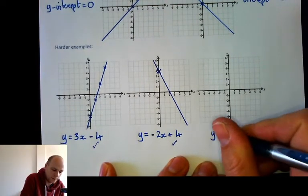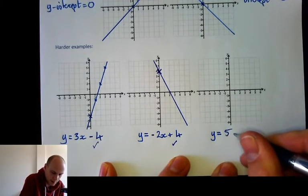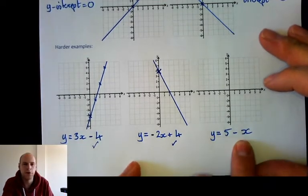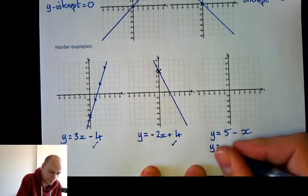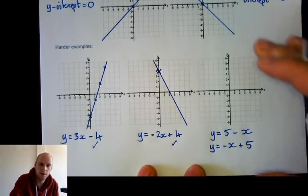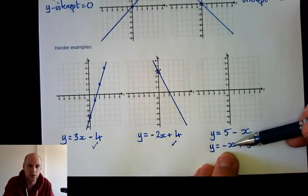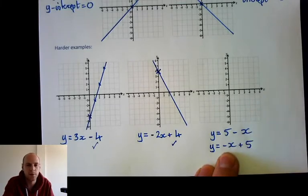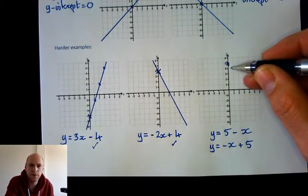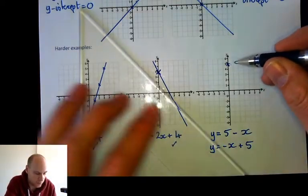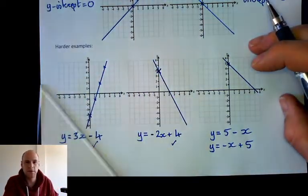Let's make the last example a little bit more difficult. This one is more difficult because it's not in the right format, so we need to rearrange it. After rearranging, it has a y-intercept of 5 and a gradient of minus 1 — we don't write the little 1, but it's minus 1x. The y-intercept is 5, so there's my point on the y-axis. It's got a gradient of minus 1, so for every one across, go down by 1. And there is my line.